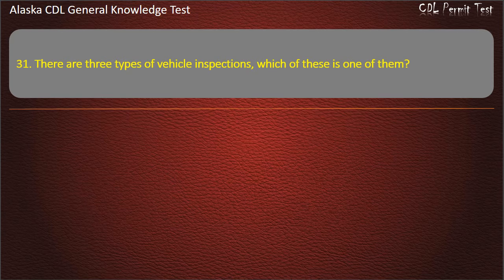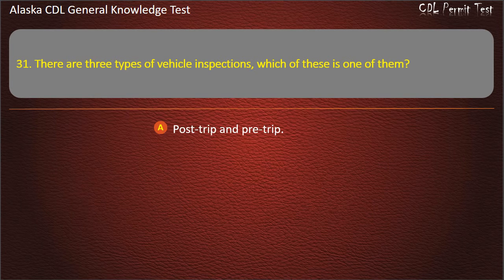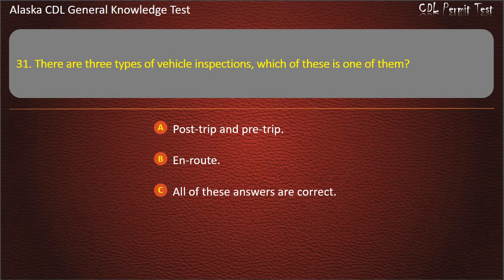Question 31. There are 3 types of vehicle inspections. Which of these is one of them? Post-trip and pre-trip, en route, or all of these answers are correct. Answer: All of these answers are correct.